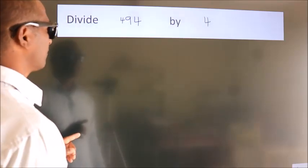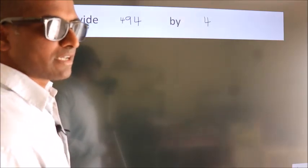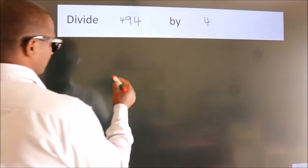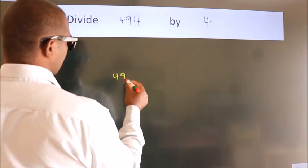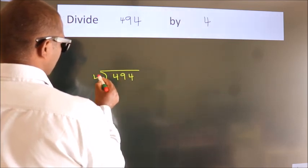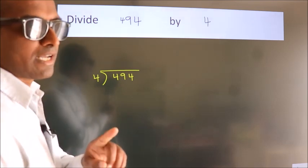Divide 494 by 4. To do this division, we should frame it in this way. 494 here, 4 here. This is your step 1.